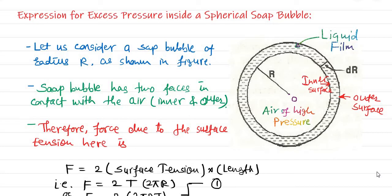Again similarly, we will consider a spherical soap bubble of radius R and with center O. Since this soap bubble has two surfaces, therefore whatever force is due to the surface tension, that force is twice that of the droplet, as we have seen in the case of the droplet.